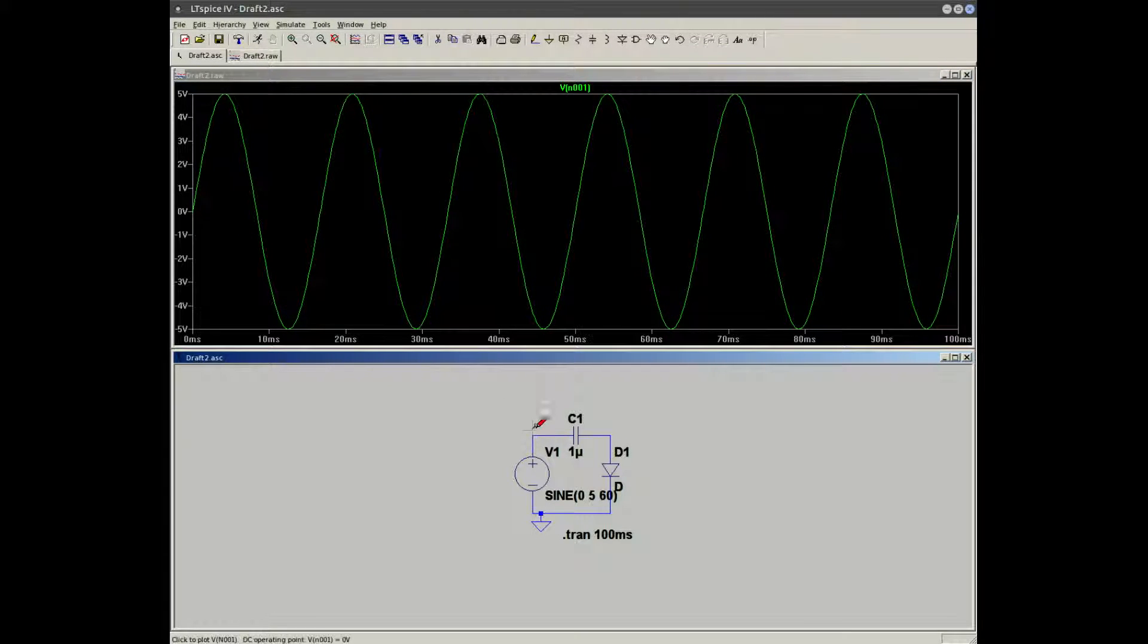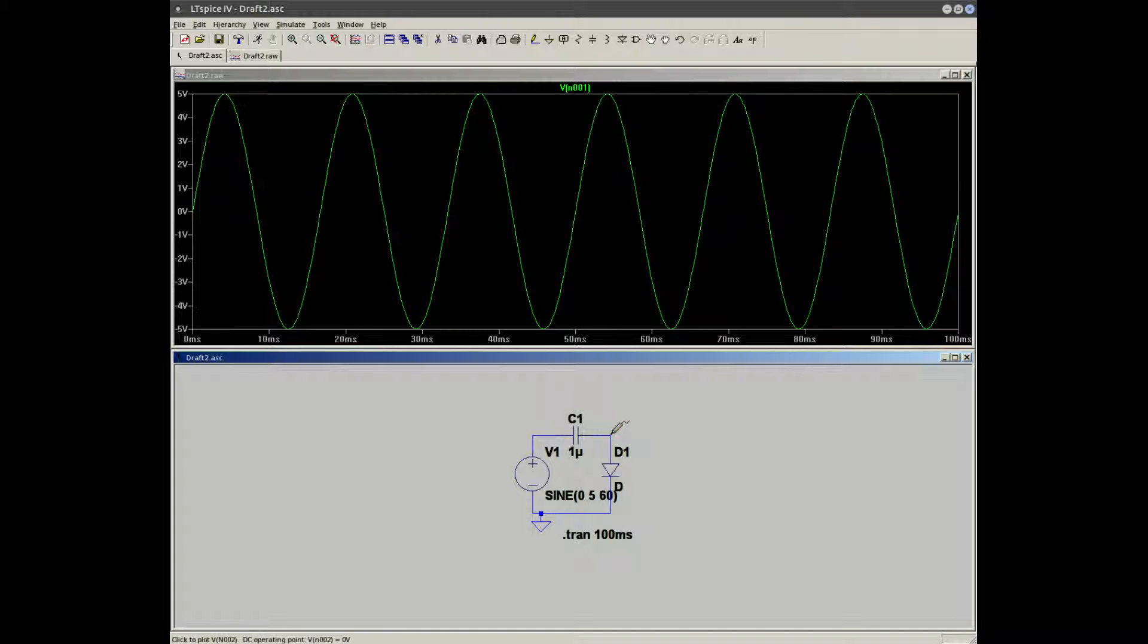Here's the input waveform, and here is our shifted output waveform. And if you look here, you'll see about 0.7 volts right there, and that accounts for the voltage drop across the diode.